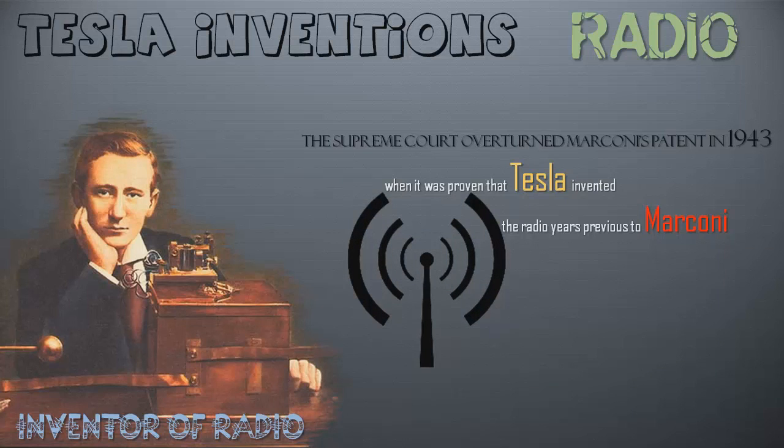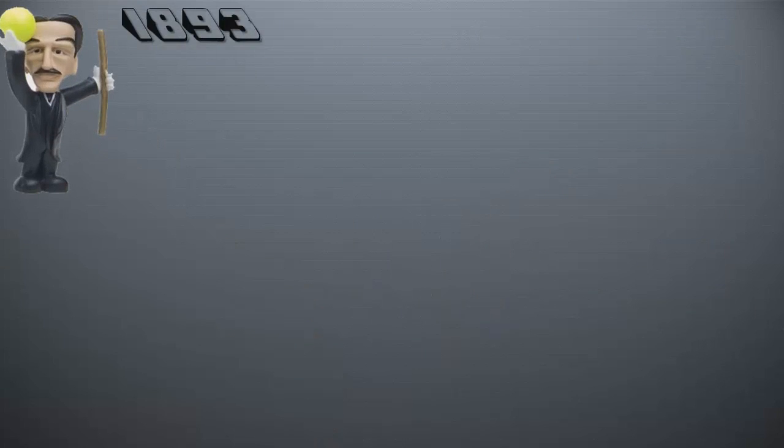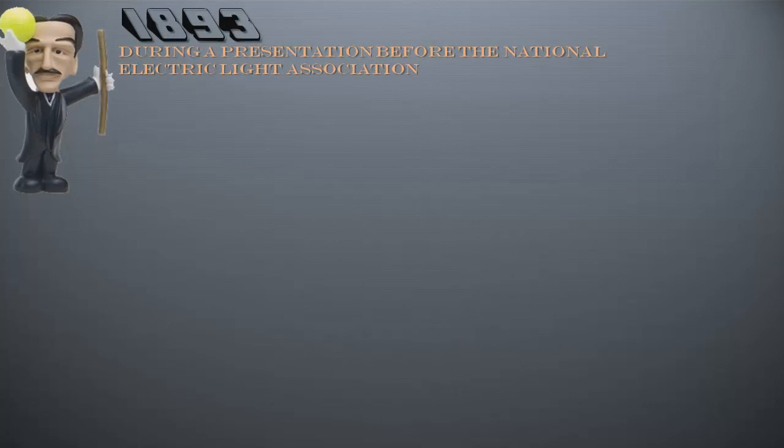Radio signals are just another frequency that needs a transmitter and receiver, which Tesla also demonstrated in 1893 during a presentation before the National Electric Light Association.